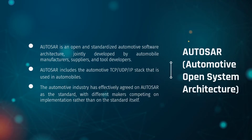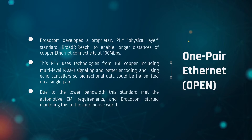Autosar is an open, standardized automotive architecture jointly developed by manufacturers and tool developers — a TCP/UDP/IP stack used in automotive components that the entire automotive industry agreed on rather than fragmenting into silos. Broadcom made a physical chip, a PHY standard called BroadR-Reach, enabling longer-distance copper Ethernet connectivity at a sustained 100 megabits per second. It uses technology from 1GE copper, including multi-level PAM3 signaling, better encoding, and echo cancelers, allowing bi-directional data flows on a single pair. Due to lower bandwidth, this standard met automotive EMI requirements.